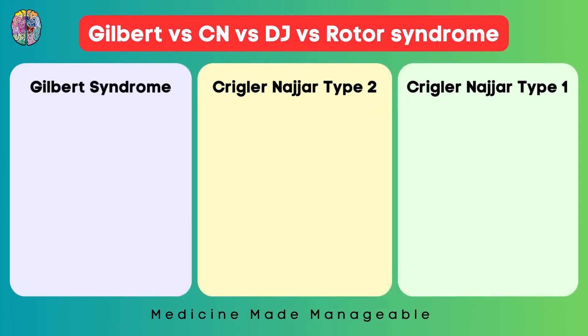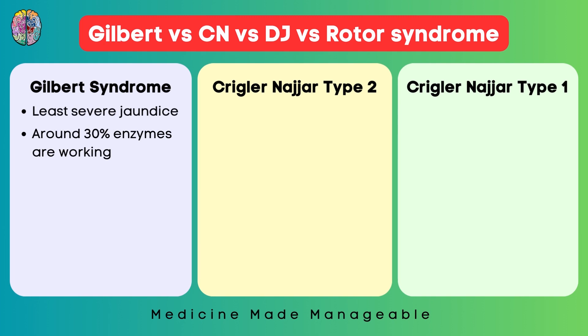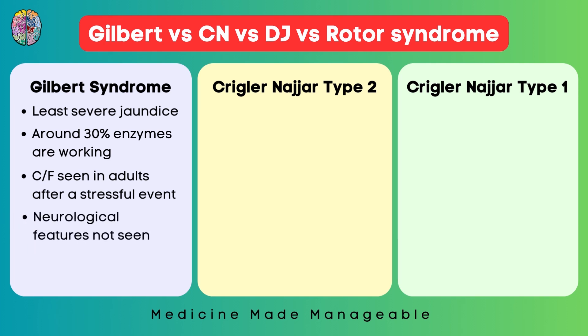Now let's go through important clinical features of each condition. The least severe jaundice is seen in Gilbert syndrome, because around 30% of enzymes are still working. Clinical features appear mostly in adults and after stressful events like drinking alcohol or illness. Neurological features are not seen, the disease mostly goes undetected, and specific treatment is not usually required.